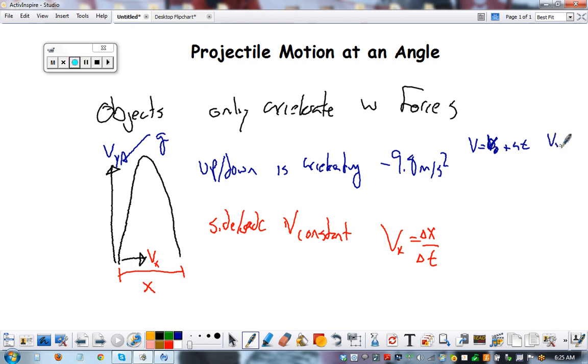Velocity equals velocity initial plus acceleration times time. This is all velocity in the y-direction. So, we're looking at the up-and-down component. Velocity final squared minus velocity initial squared equals 2 times acceleration times change in displacement in the up-and-down direction, or y.